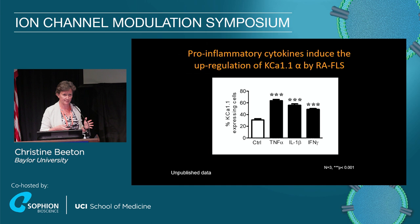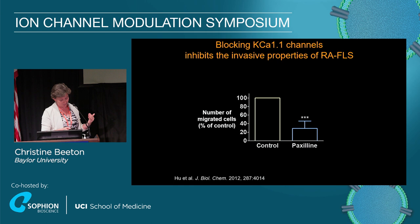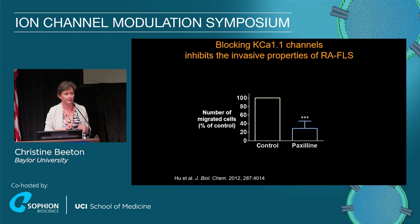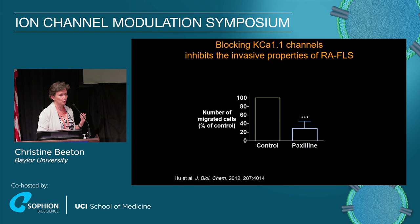We did a lot of functional assays in vitro; I'm only going to show you one in the interest of time. Those cells are extremely invasive — that is one of the characteristics used in the field to assess aggressiveness. We measured invasiveness through a transwell membrane coated with matrigel to mimic the extracellular matrix. When you look at the number of invading cells in a healthy control normalized to 100%, treatment with paxilin reduces that quite a bit. We've also since used iberiotoxin and see a similar result.